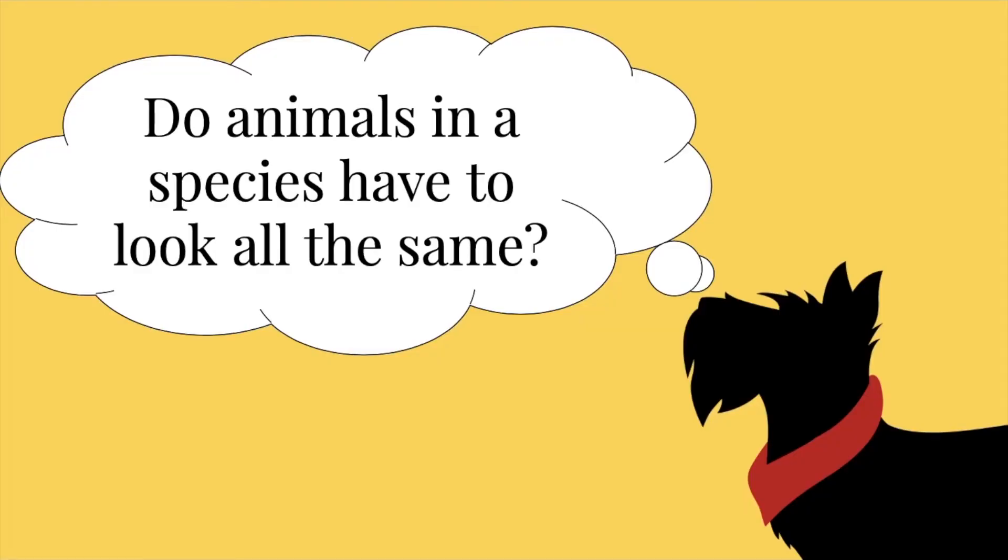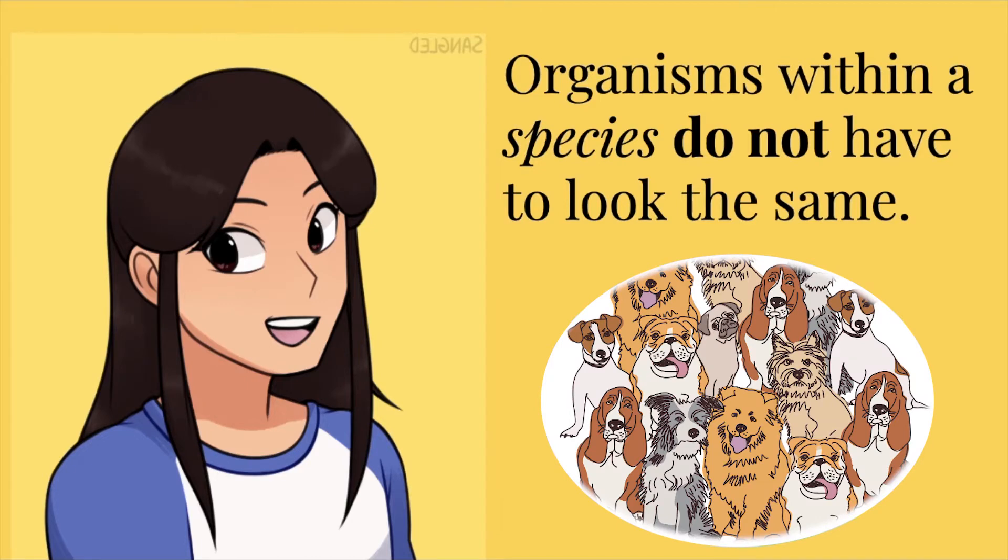Do animals in a species have to look all the same? No, Scotty. Organisms within a species do not have to look the same. They can look different and even have unique character traits from other organisms within the species. The only thing that matters is that they are similar enough that they are able to have babies with each other.